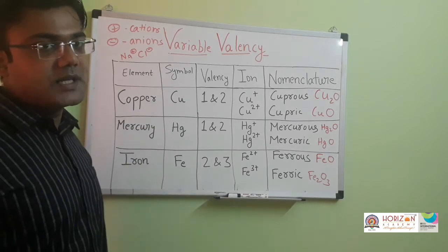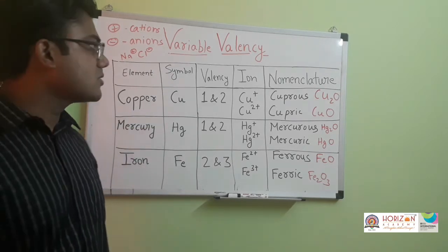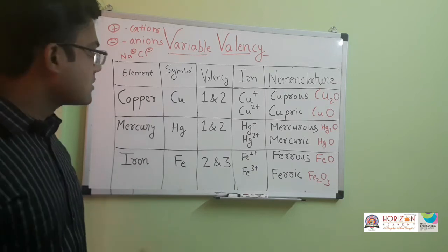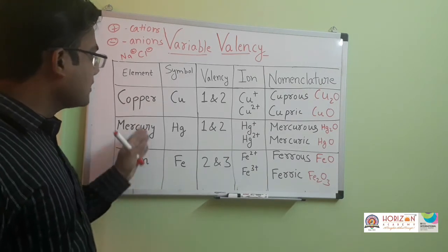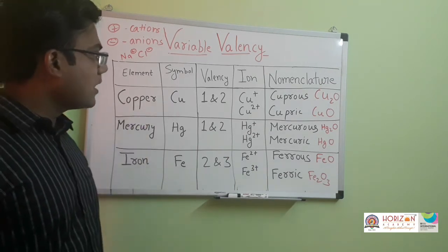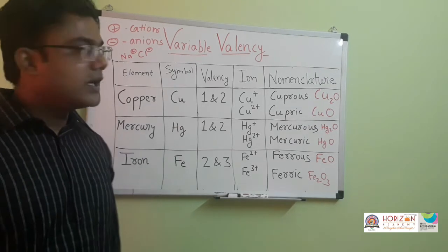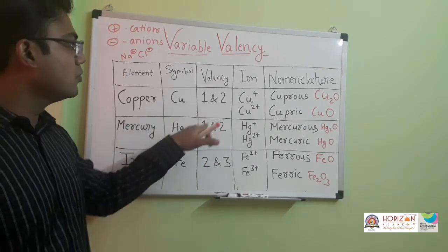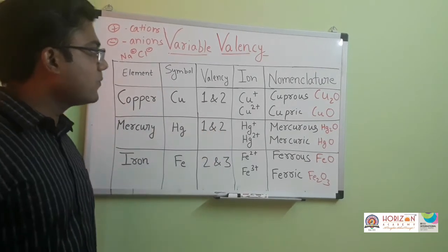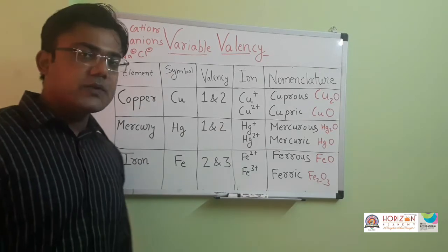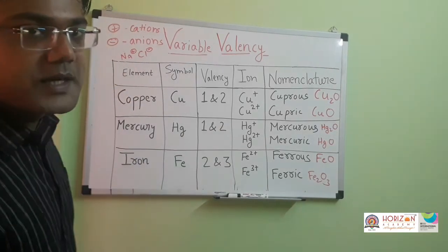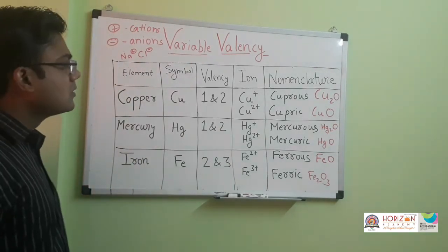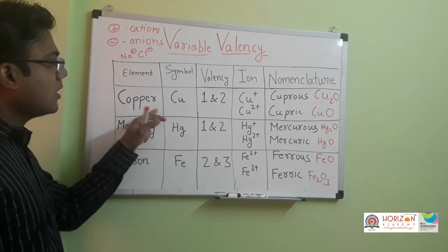In some conditions or reaction conditions, some elements like copper, mercury, and iron can have different valencies. They have variable valency: one and two, one and two, two and three. They can form different numbers of bonds according to different conditions. Let us see the example of copper.